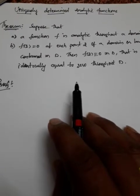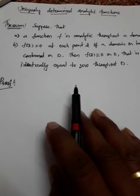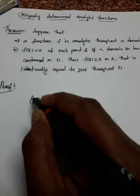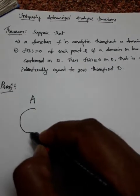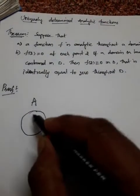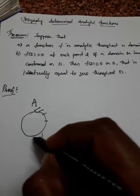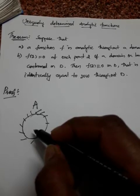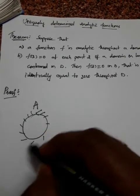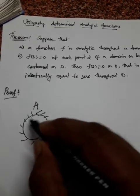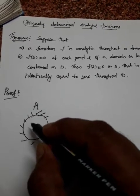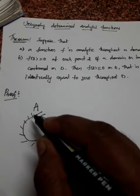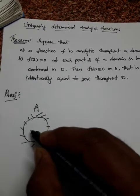Before proving the theorem, we need to understand two important definitions. First, an open set: a set A is called an open set if it does not include any of its boundary points — there are no boundaries at all. An open set contains none of its boundary points.